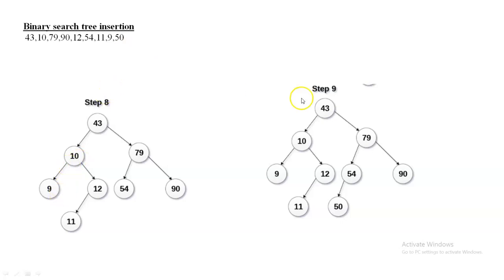The last node is 50. Compare 50 with the root 43 — greater, go right. Compare 50 with 79 — lesser, go left. Left side has 54 present. Compare 50 with 54 — 50 is less than 54, so insert 50 as the left child of 54. To summarize the insertion rule: compare the new node with the root first; if lesser go left, if greater go right. This rule applies recursively for every subtree in the tree.